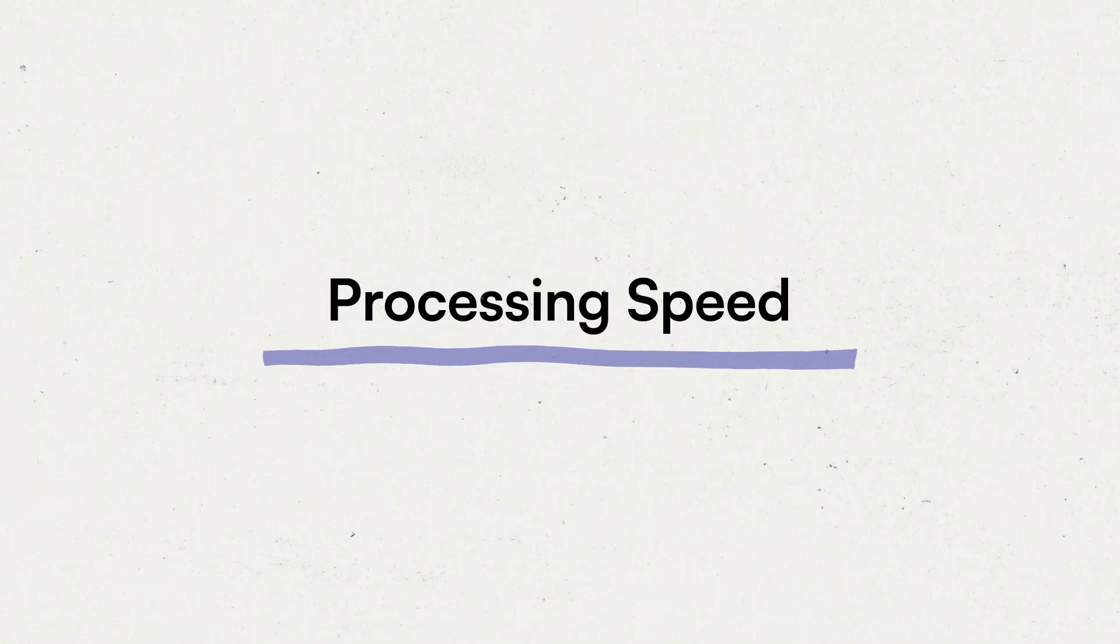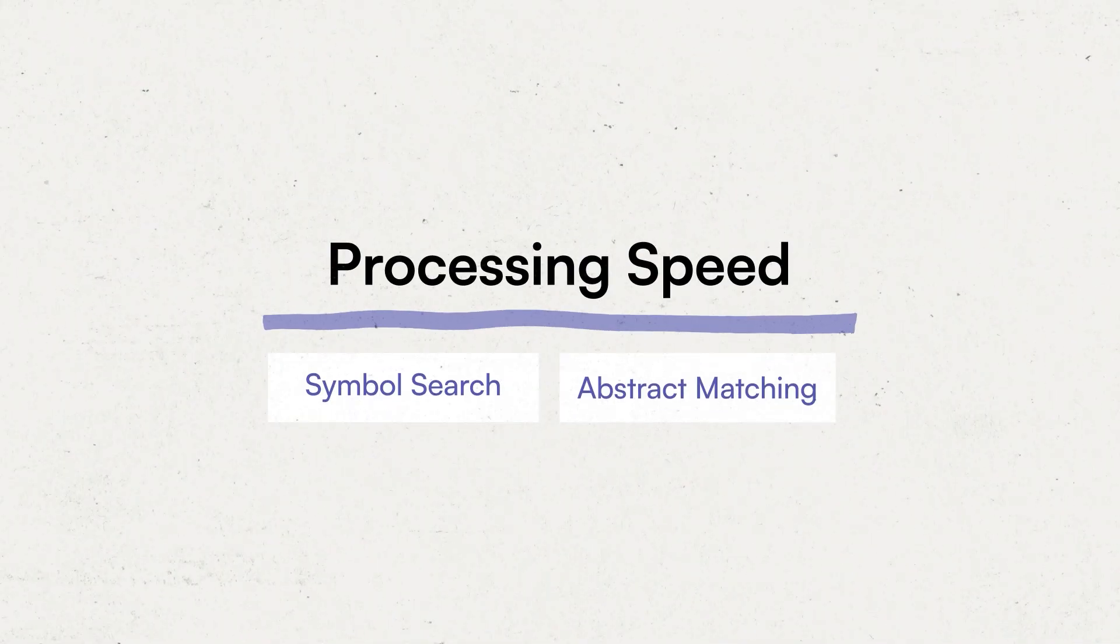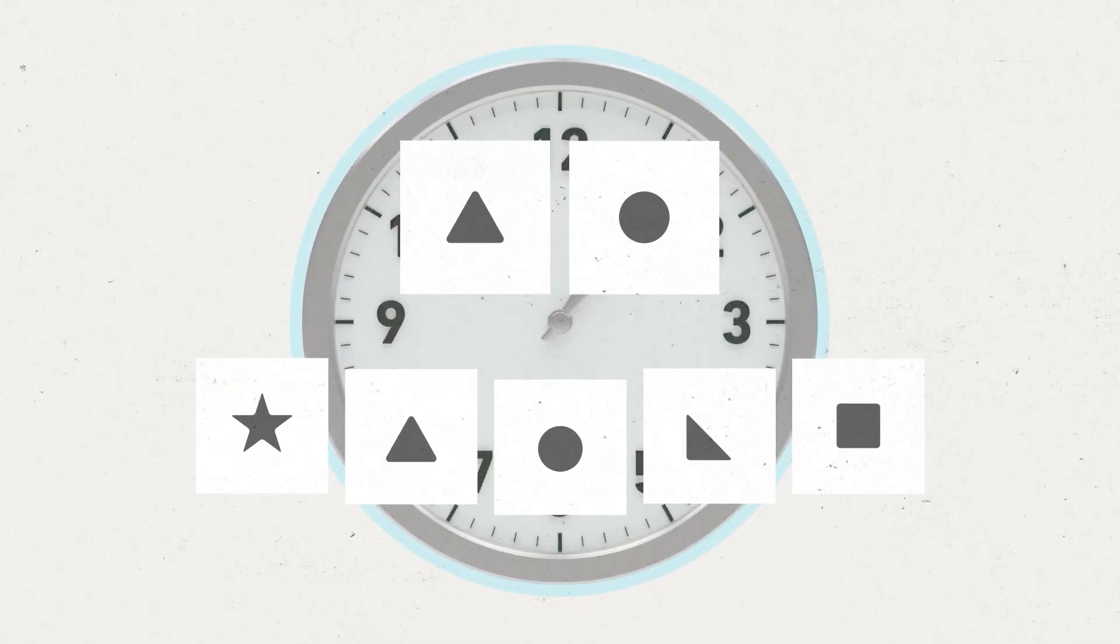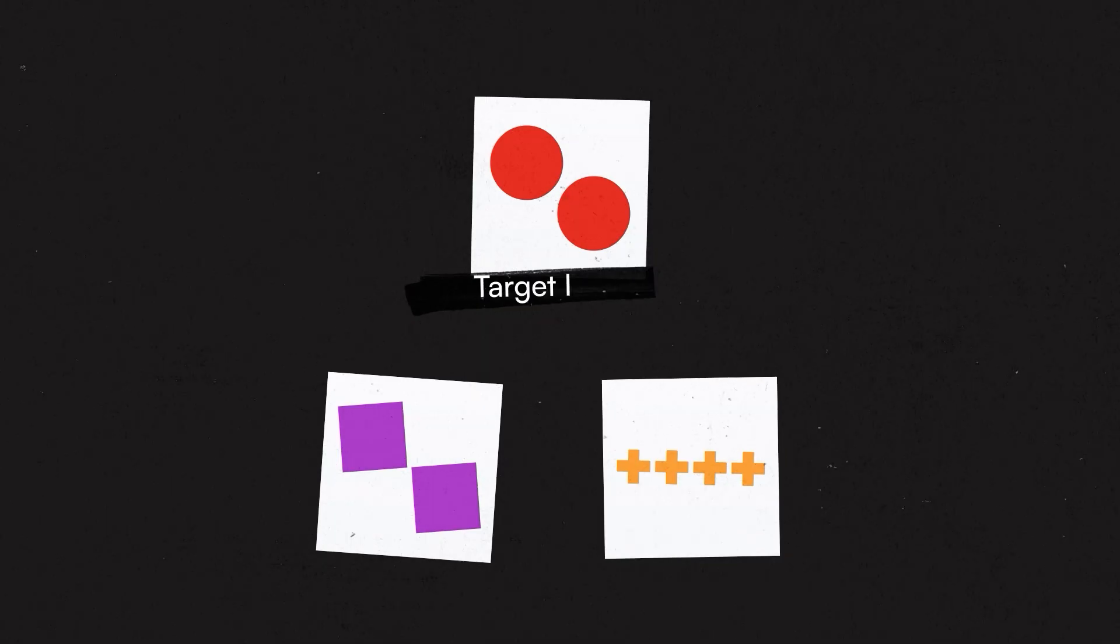The fourth index is called the Processing Speed Index. Its subtests are the Symbol Search and Abstract Matching subtests. Each of these subtests present a very simple task to be accomplished as quickly as possible. Examinees get points for answering accurately as many questions as possible before time is up. In Symbol Search, examinees are shown two sets of simple symbols. The first set has two symbols in it and the second set has five symbols. The examinee is asked to identify as quickly as possible whether either of the first two symbols appears in the second set. In the Abstract Matching subtests, examinees are shown a target image and two option images. The examinee must identify which option more closely resembles the target.